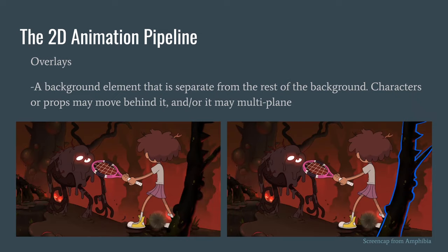An overlay is a background element that's separate from and in front of the rest of the background. In this Amphibia screenshot, the tree covering the character's foot is an overlay — it's a painted element in front of the characters. Overlays may also multi-plane, or parallax, meaning they move at a different speed across the screen from the rest of the background, creating depth. Traditionally, overlays were painted on a physical animation cel sheet literally laid on top of the characters.